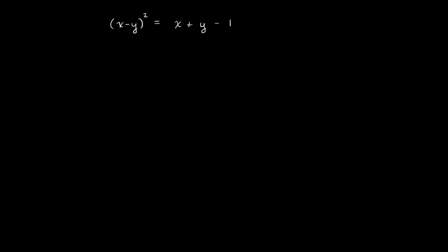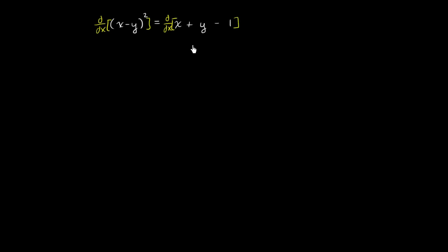Let's get some more practice doing implicit differentiation. We're going to find the derivative of y with respect to x, assuming that y is a function of x. Let's apply our derivative operator to both sides of this equation.